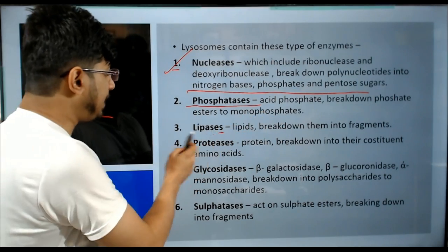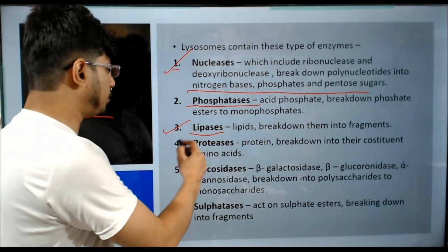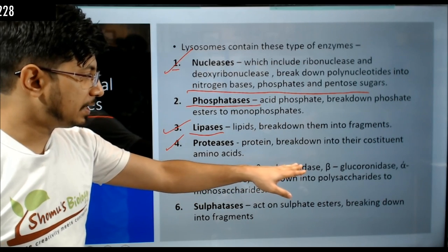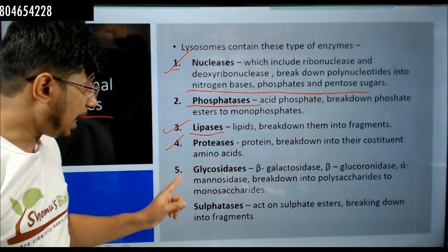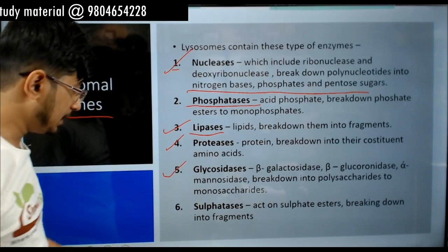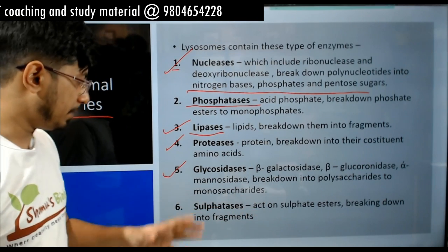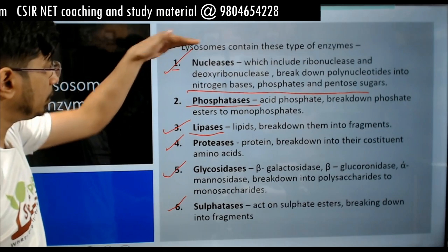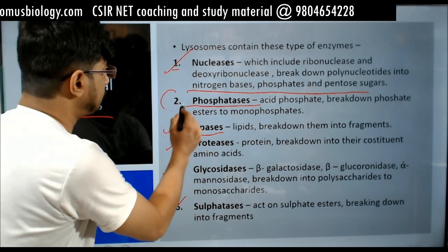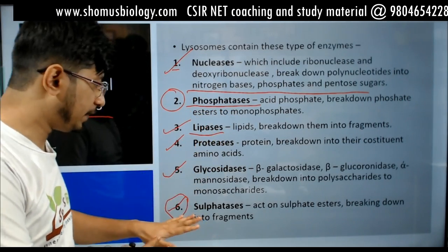Acid phosphatase breaks down phosphate esters into monophosphates. Lipases break down lipids into fatty acids. Proteases break down proteins into amino acids. Glycosidases — beta-glycosidase and beta-glucuronidase — break down polysaccharides into monosaccharides. Sulfatases act on sulfate esters, breaking them down into smaller fragments.